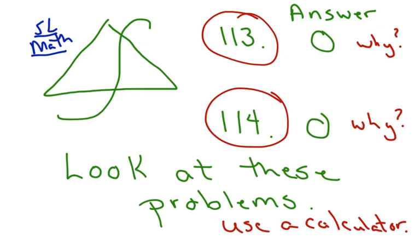Alright, before we go on, in your math textbook, you will see this green symbol. This is what you need for calculus, and in our case it will be your SL math course. So if you have a calculator at home, please do 113 and 114, it's just a calculator. The answers are 0 and 0, so try to figure out why that is.